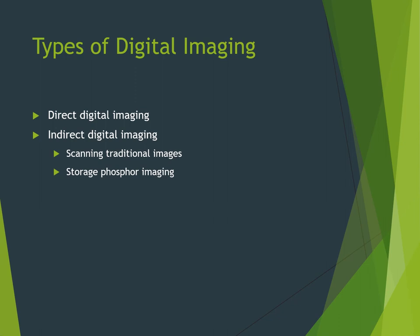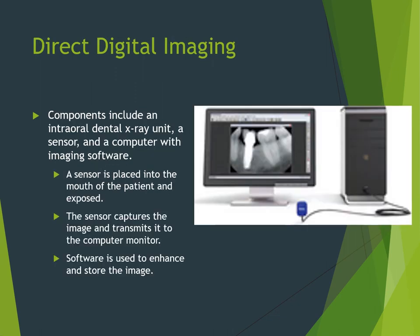There are two types of digital imaging: direct and indirect. With direct imaging, you expose the sensor and it is immediately sent to the computer. Indirect requires an additional step — you expose the receptor and then take it to a scanner before it is uploaded to the computer; this is where the storage phosphor — photo stimulable phosphor plates — are used. For direct imaging, the components include the x-ray unit, the sensor, and the computer. The sensor is placed in the mouth, captures the image, and automatically transfers it to the computer where software enhances and stores it within seconds.